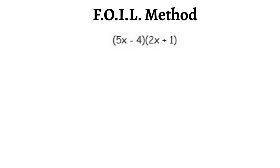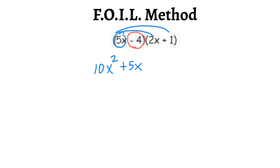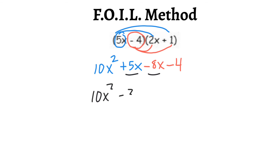Then I combine like terms: I have x squared. Negative 1 and negative 5 combine to give negative 6x. And at the end I'm left with plus 5. Let's try another one — why don't you press pause and give it a try. We're going to distribute 5x into the second binomial: 5x times 2x gives 10x squared, and 5x times positive 1 gives positive 5x. Then the second term, negative 4, distributes: negative 4 times 2x gives negative 8x, and negative 4 times positive 1 gives negative 4. Combining like terms: 10x squared, and 5x minus 8x gives negative 3x, minus 4.